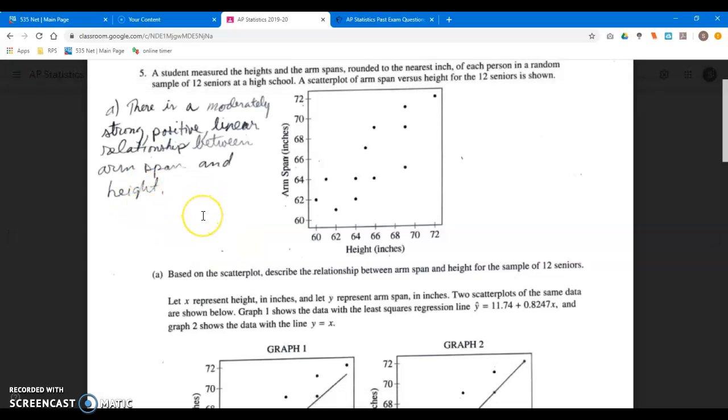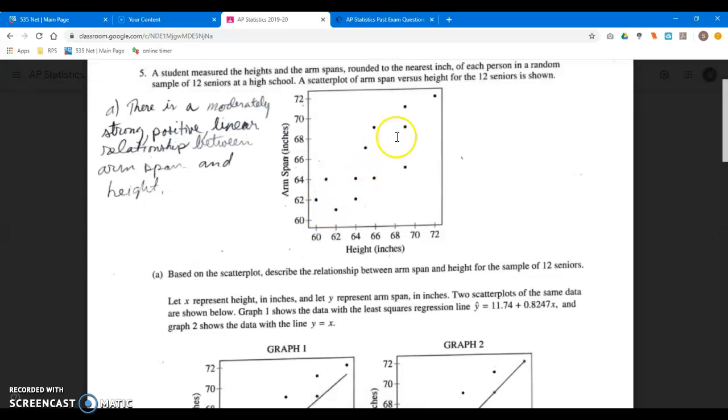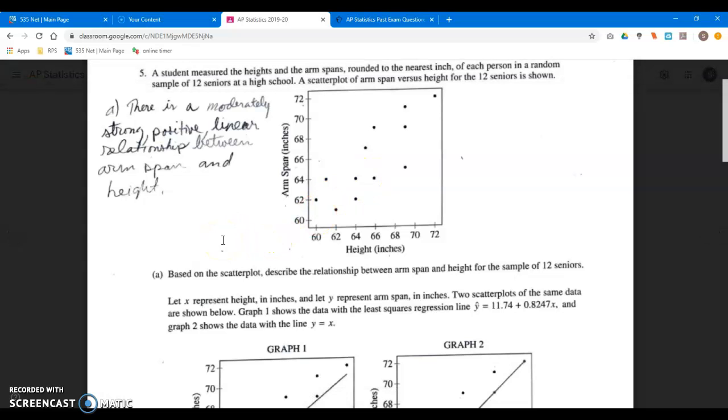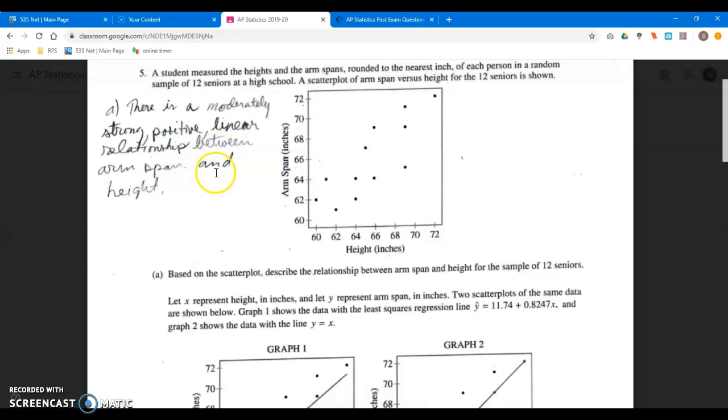So anyway, part A is to describe the relationship between arm span and height for these 12 seniors. We see an approximately linear relationship. It looks like points would be scattered about a line if we fit a line, even though they're not exactly on the line but maybe not too far from it. So I said there's a moderately strong positive linear relationship between arm span and height. This is a great review question.